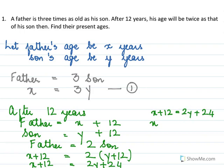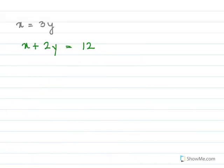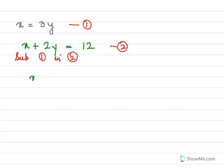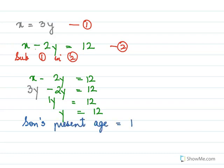Taking x and y together, 2y goes to the other side, giving x minus 2y equals 12. This is equation two. Now we substitute equation one into equation two: x minus 2y equals 12, and for x we put 3y. So 3y minus 2y equals 12, giving y equals 12. Since y was the age of the son, the son's present age equals 12 years.